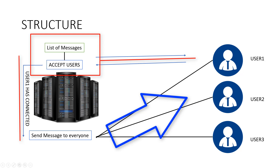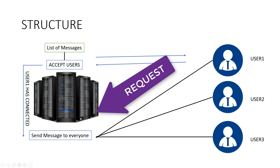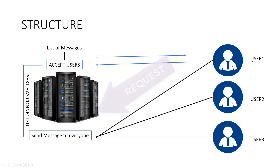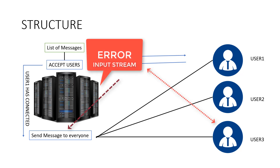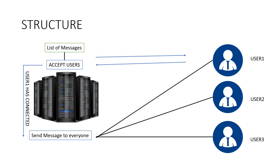Every user that is connected will be able to send messages. They will send a request to send their message, and it will be broadcast to everyone — user one, user two, and user three. Last, we will create a function so that when a user disconnects, all users will be able to see that message. This is the overall structure we will be using for our project.